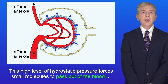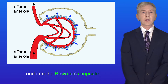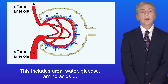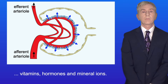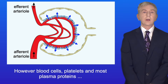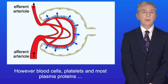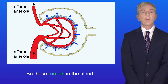This high level of hydrostatic pressure forces small molecules to pass out of the blood and into the Bowman's capsule. This includes urea, water, glucose, amino acids, vitamins, hormones and mineral ions. However, blood cells, platelets and most plasma proteins are too large to pass through, so these remain in the blood.